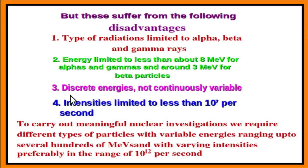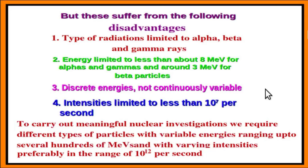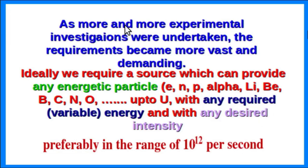Also, the intensities of these radiations and particles are limited to less than about 10 to the power 7 per second. In order to carry out meaningful nuclear investigations, we require different types of particles with variable energies ranging up to several hundreds of MeV or higher, and with varying intensities preferably in the range of 10 to the power 12 per second. As more experimental investigations were undertaken, the requirements became more vast and demanding.